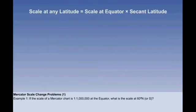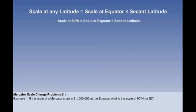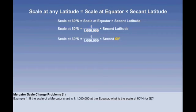Scale at any latitude equals scale at the equator times secant of the latitude. We're trying to find the scale at 60 north — that's the unknown, so we leave it on the left-hand side. Do we know scale at the equator? Yes — it's given in the question: 1 to 1 million. So let's put it in. The latitude is 60 north, so put that in too.